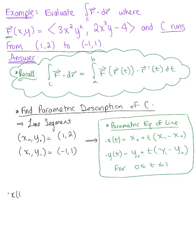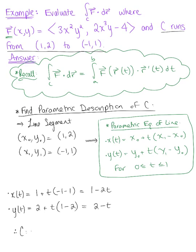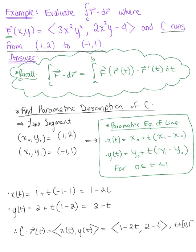Plugging these in, x(t) is going to be 1 plus t multiplied by negative 1 minus 1, giving us 1 minus 2t for x. The y component is going to be 2 plus t multiplied by 1 minus 2, giving us 2 minus t. Therefore, we can parametrically describe this line segment C by the vector-valued function r(t) with components 1 minus 2t and 2 minus t, for t in [0, 1].